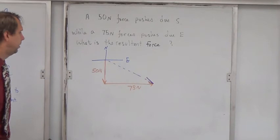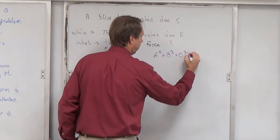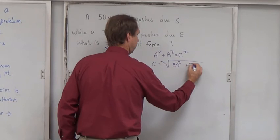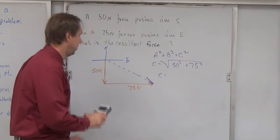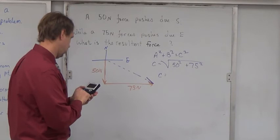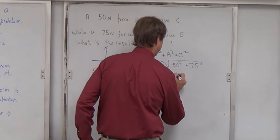Pythagorean theorem. So c equals the square root of 50 squared plus 75 squared. C equals 90. And that zero is significant. That is 90 newtons.